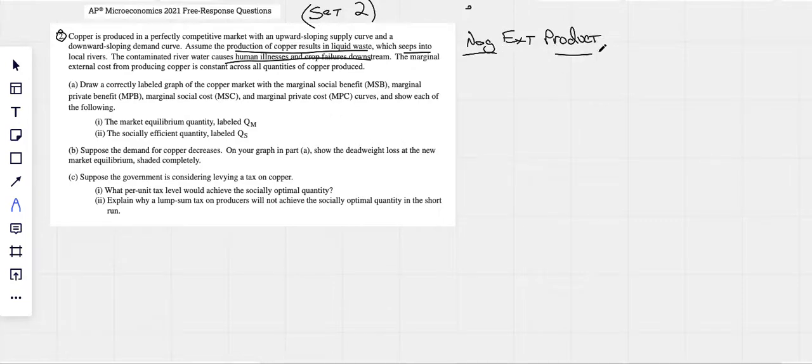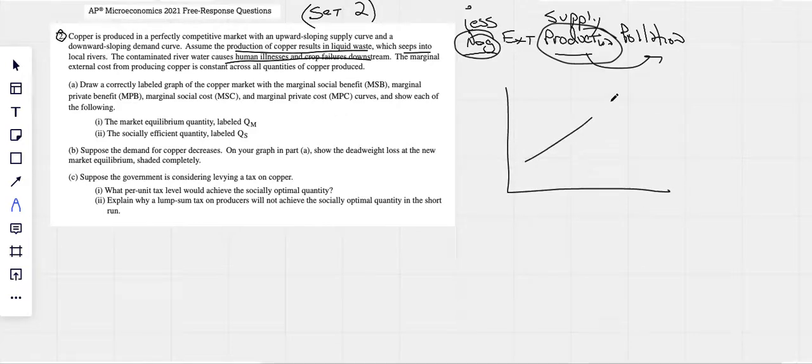A negative production externality. Anytime you've got pollution, right? We know pollution is a production externality. It's negative, so we know we're going to want less of this good, and it's production, that implies two supply curves. So we do know how to draw it. I'm just going to go ahead. Two supply curves, those are supposed to be parallel. Then one demand curve. It is price and quantity on the axes. Demand, MSB, MPB.